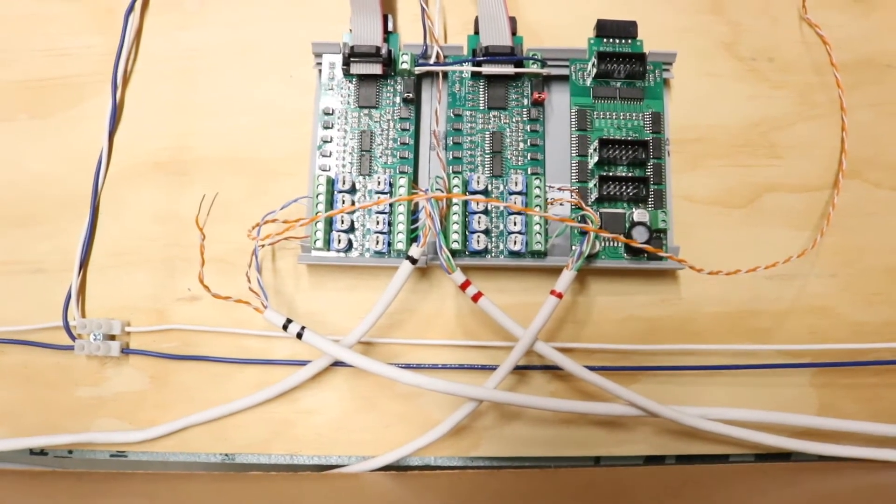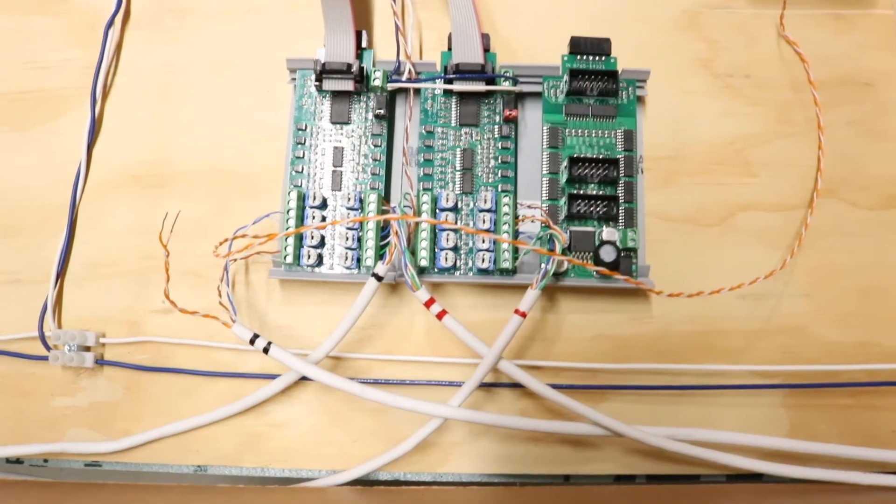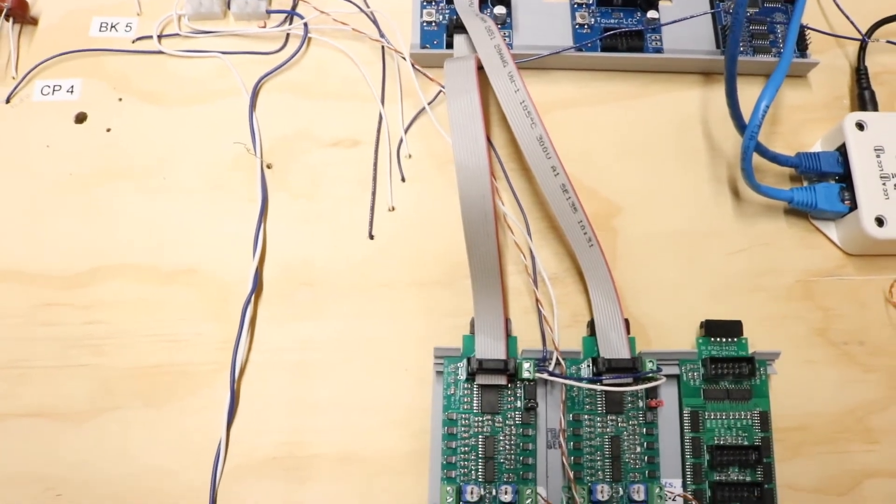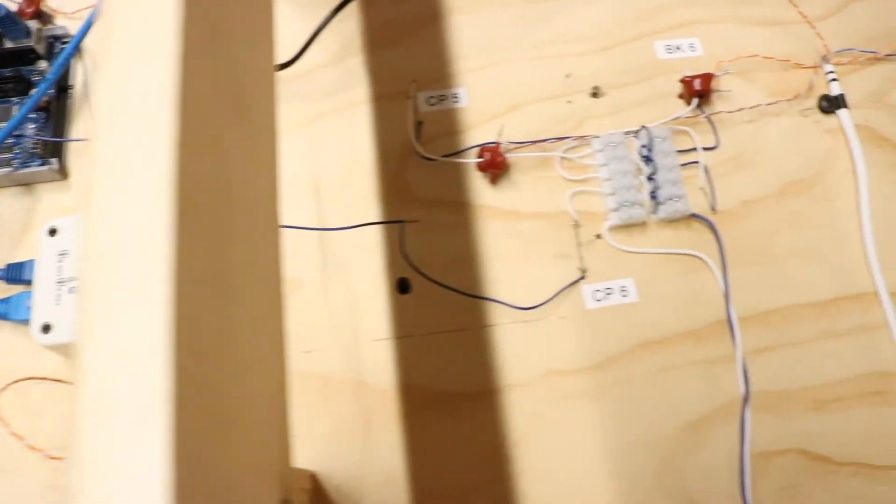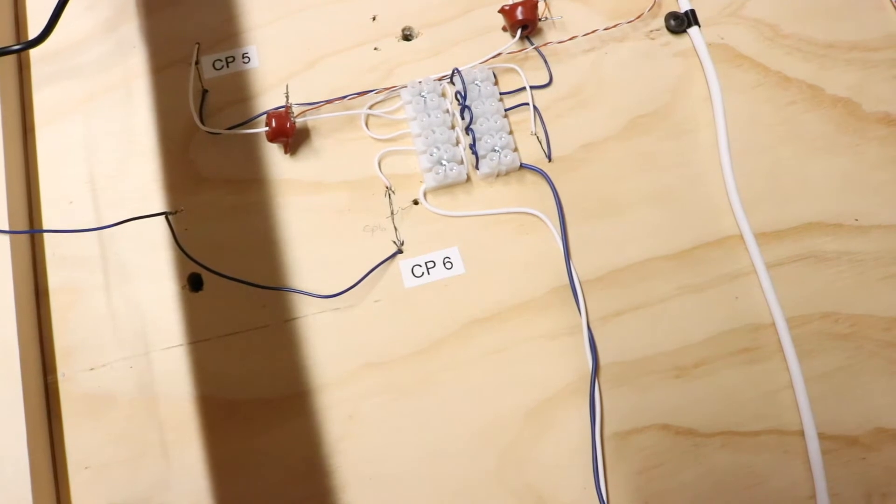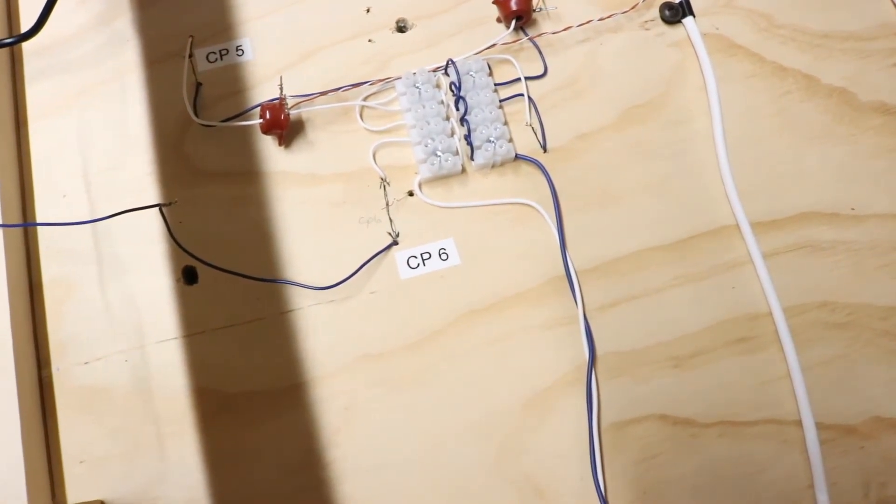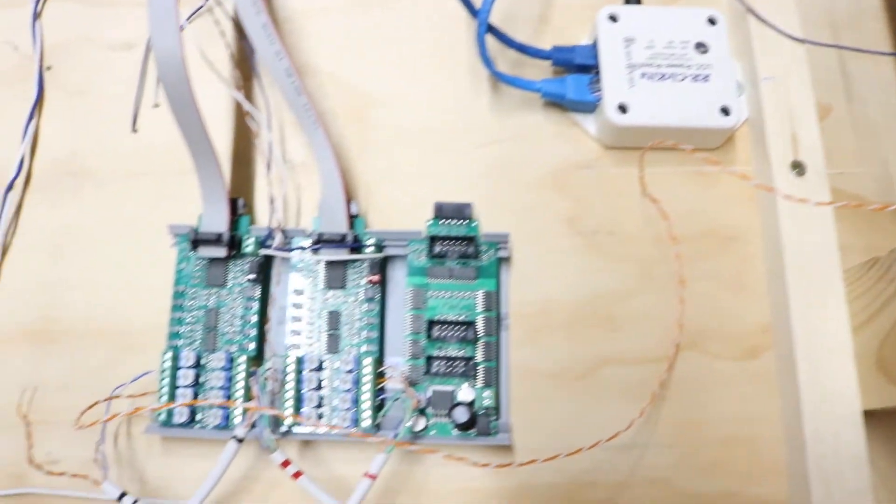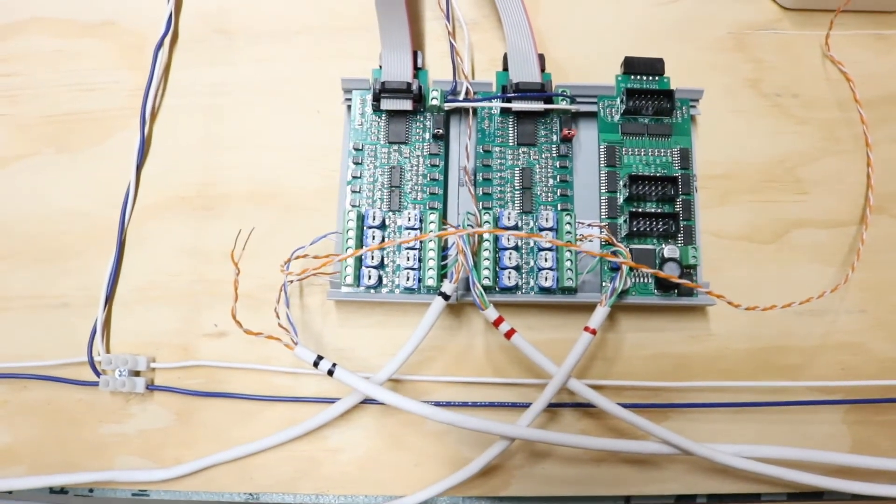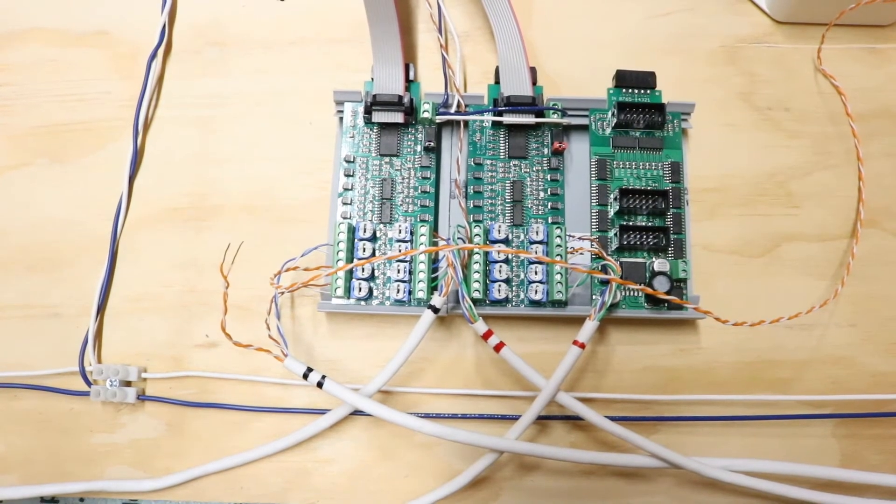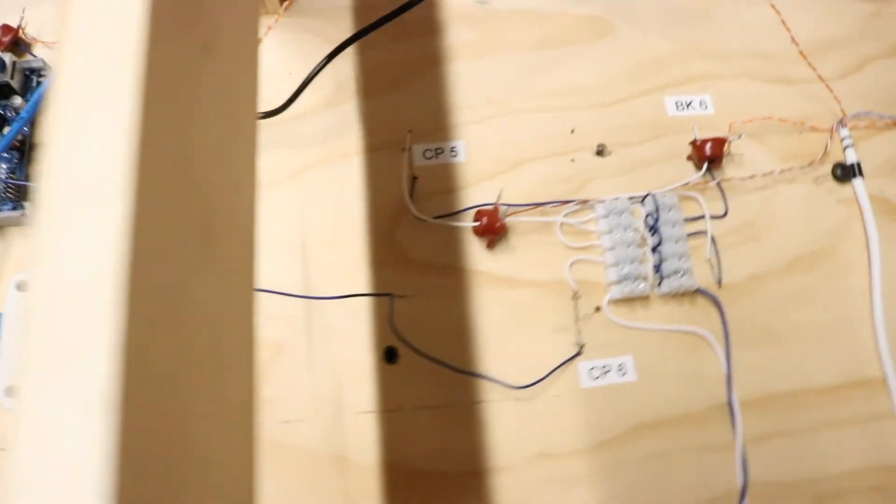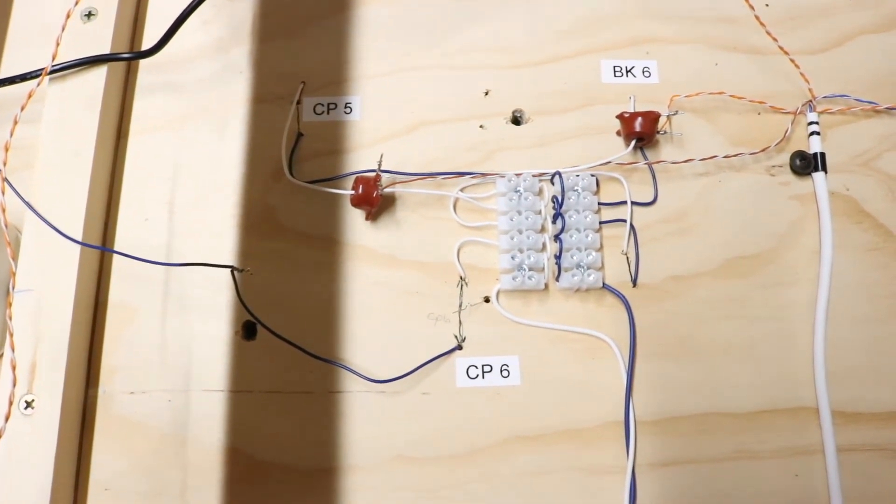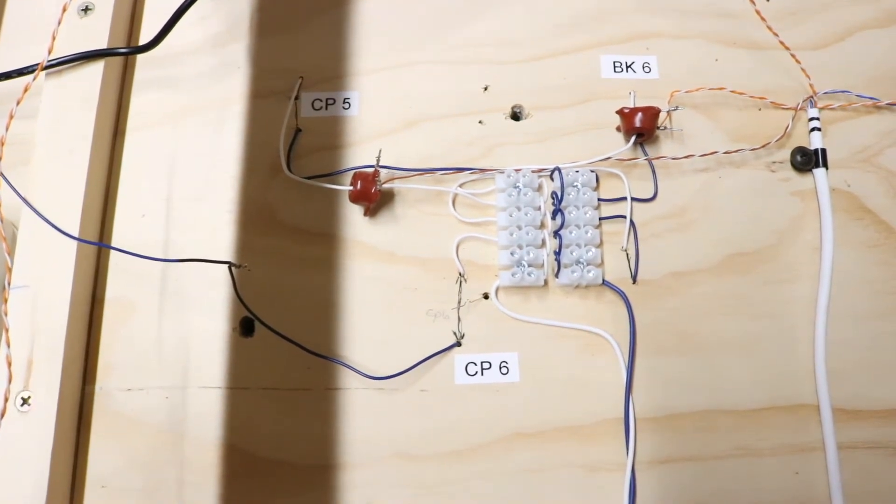So what was going on is I had two feeder drops on that particular section of track, up here where you can see the cluster of four wires coming out there. There's a section of track, I know you can't see it cause I'm upside down, but that connects over here to CP six. That's actually all one block and just for whatever reason, I dropped two feeders. And I misread the instructions on the block detector, the BOD eight, and you have to have all feeder wires run through the CT coil.